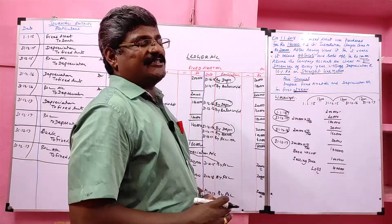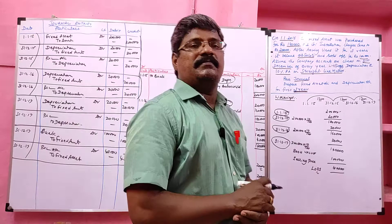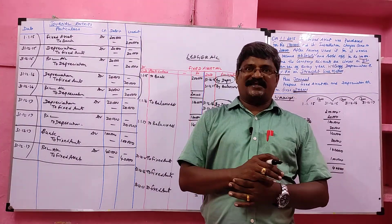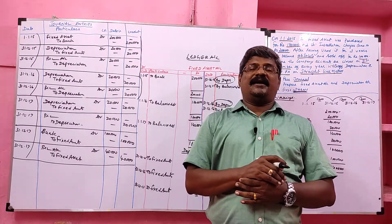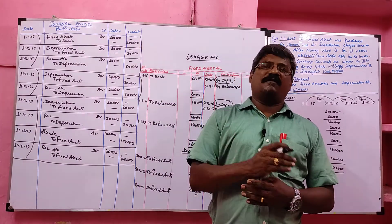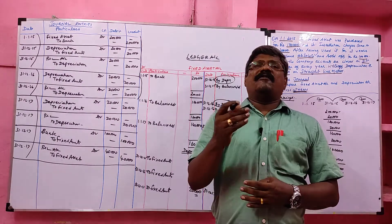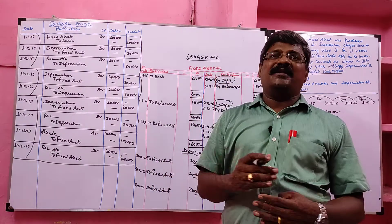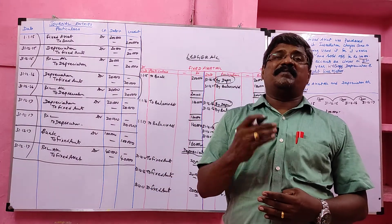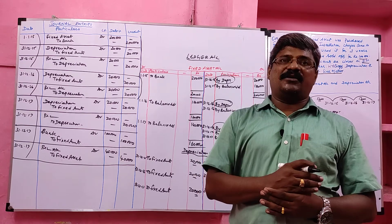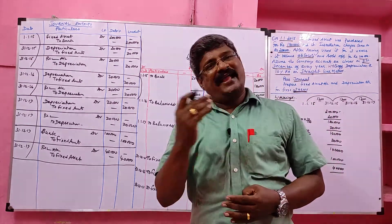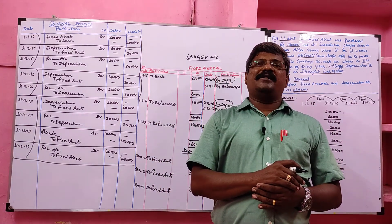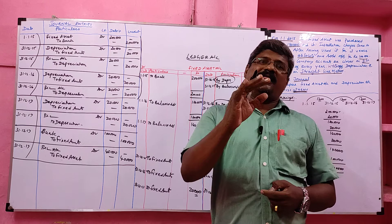In this class we learned the meaning of the Straight Line Method, the formula for finding amount and rate of depreciation, and the preparation of journal entries and ledger accounts relating to the Straight Line Method. In the next class we will learn different problems. Thank you.